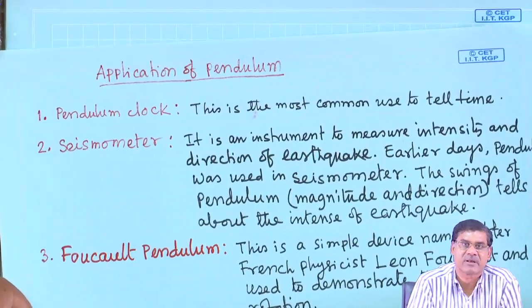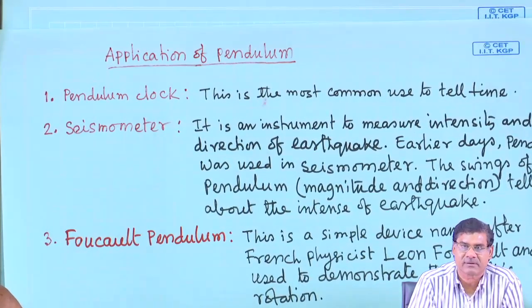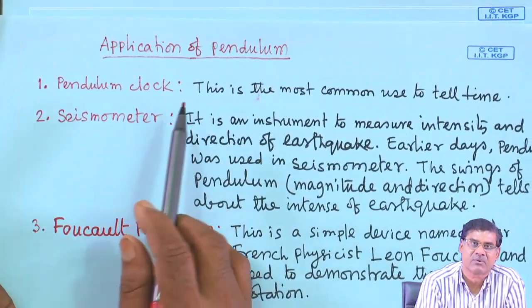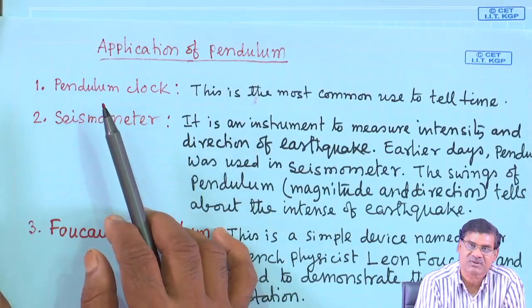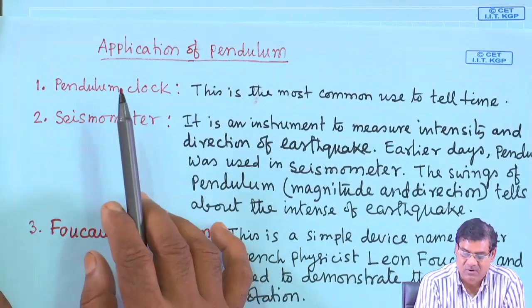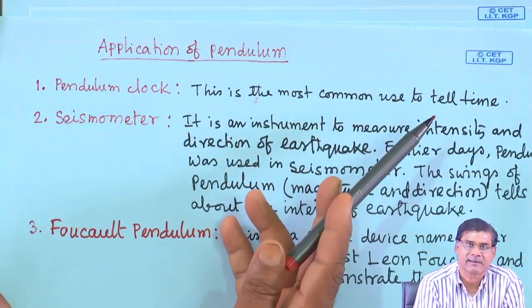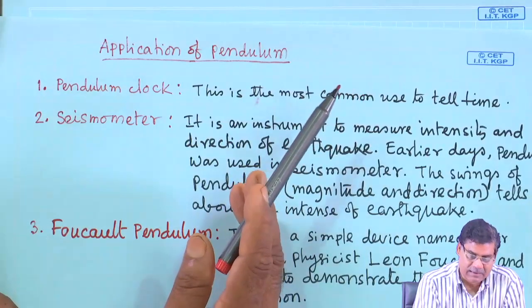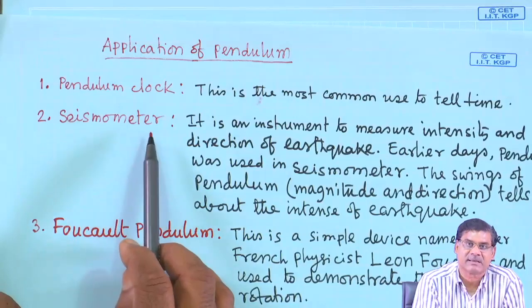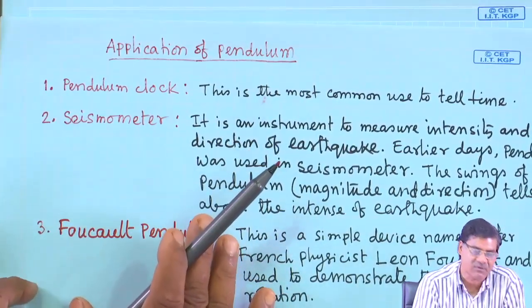For applications of the pendulum: the pendulum clock is a very familiar application — it was the most common way to tell time in earlier days. Another application is the seismometer. I will continue this discussion in the next class. Thank you.